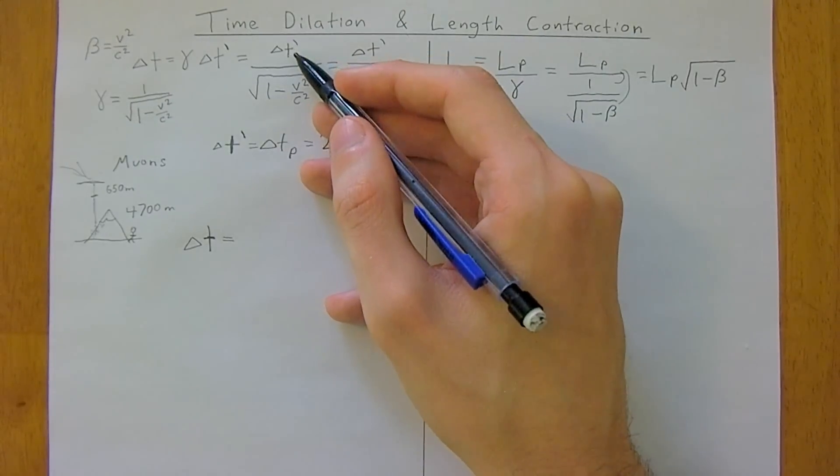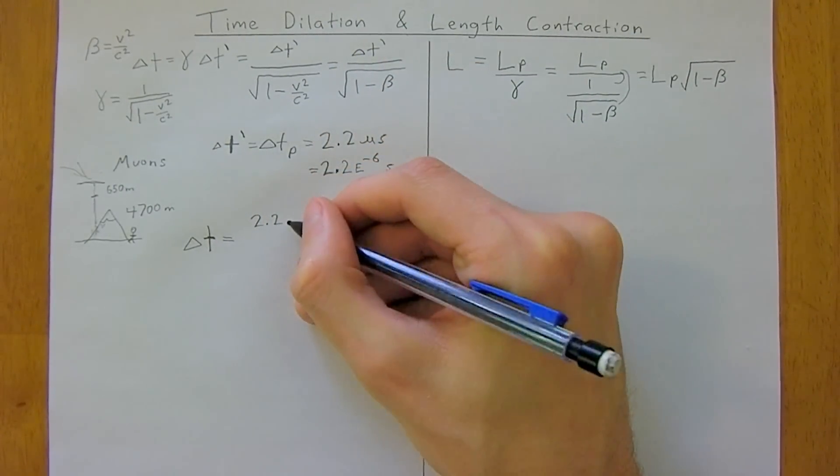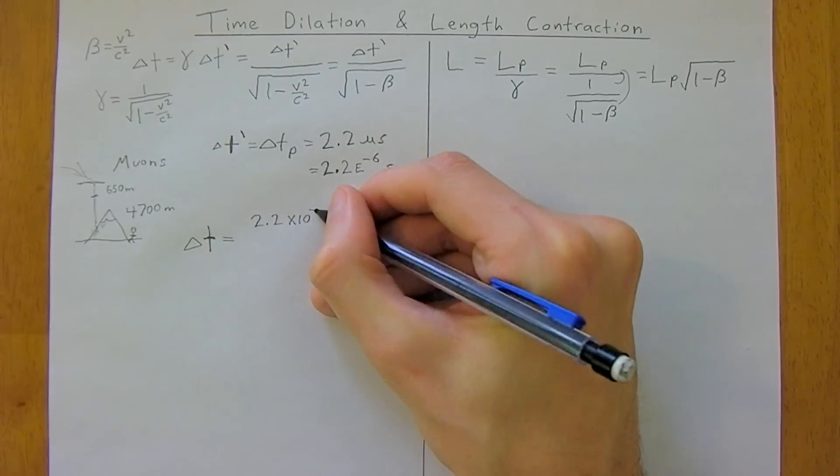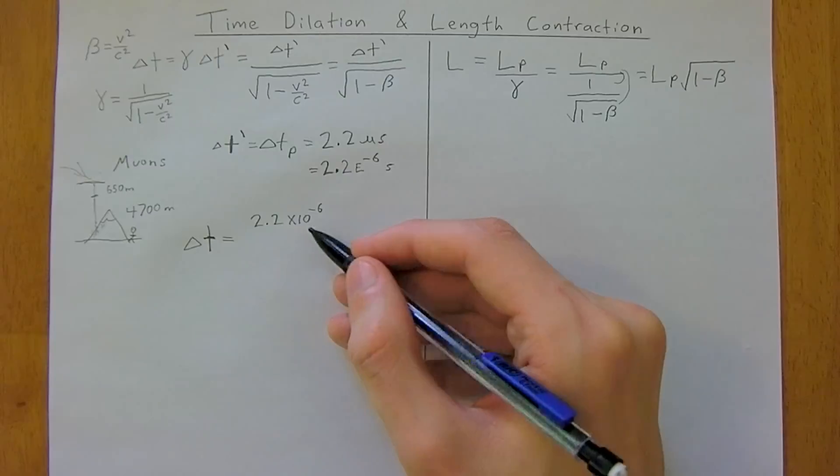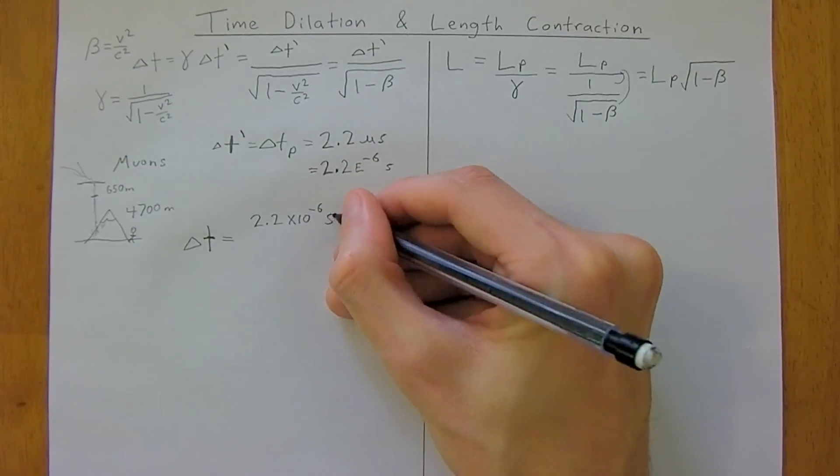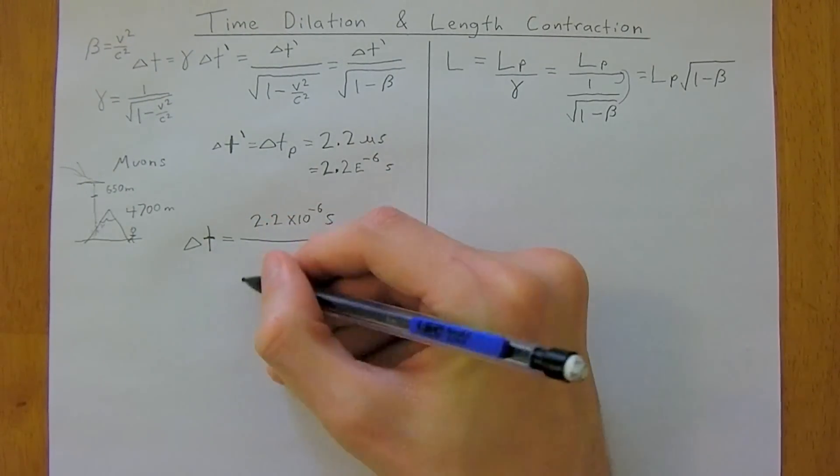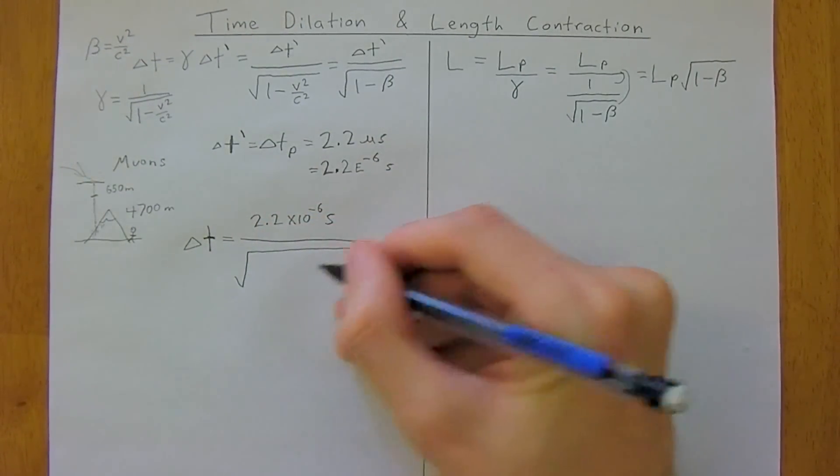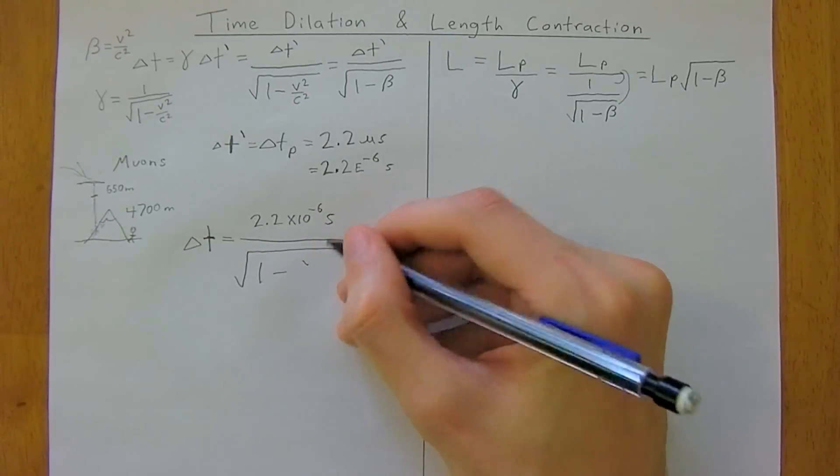So, we have the proper time for the muon is 2.2 times 10 to the negative 6 seconds, which is the proper lifetime for the muon, divided by the square root of 1 minus v squared over c squared.